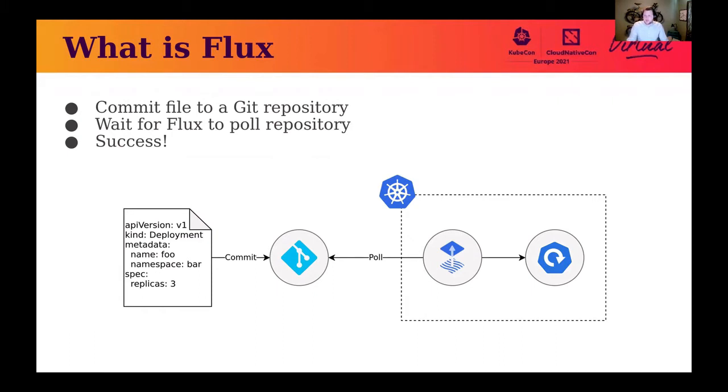This also works in the sense that if somebody were to go in and delete this deployment in the cluster, Flux will eventually detect the drift between what is wanted or expected and what is actually there in cluster and reapply the deployment.